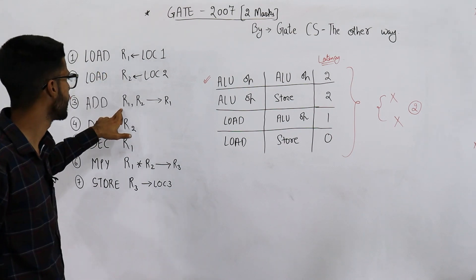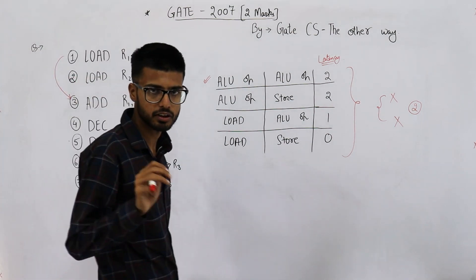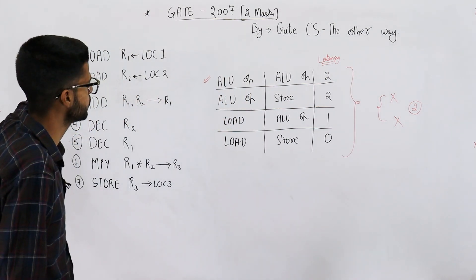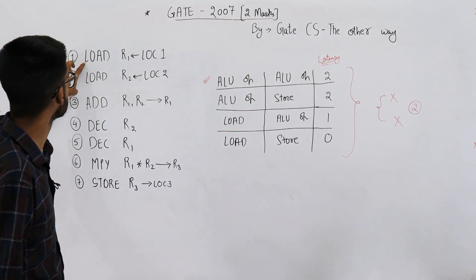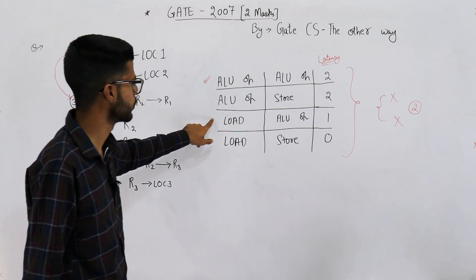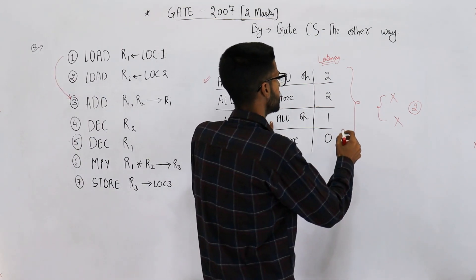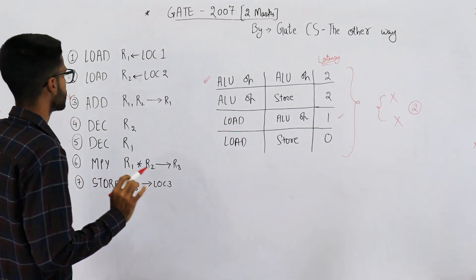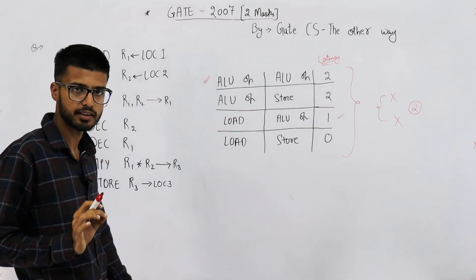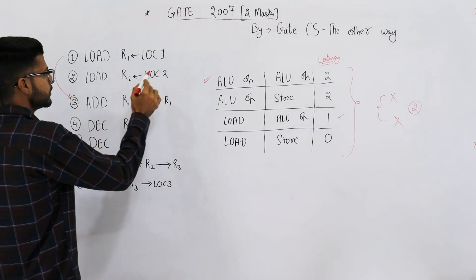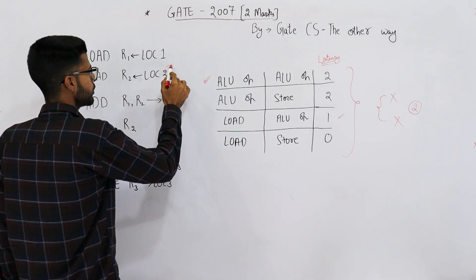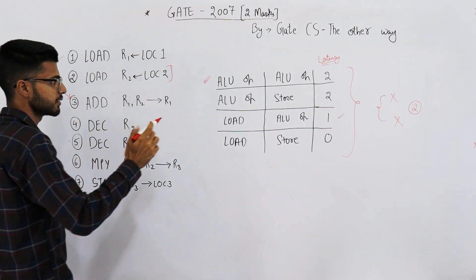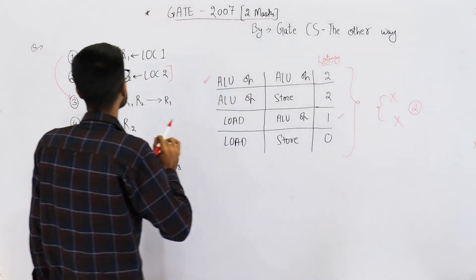There is a dependency between instructions one and three because the value produced by instruction one is R1, and that value is used in instruction three. This is a load-to-ALU dependency, which requires a latency of one. But we need not add that latency separately because instruction two is already placed between one and three, so it is taken care of automatically.